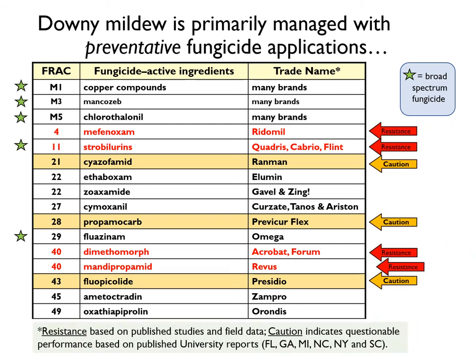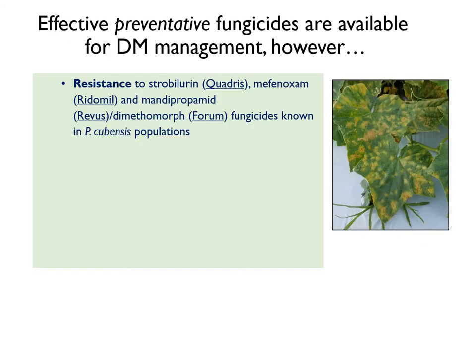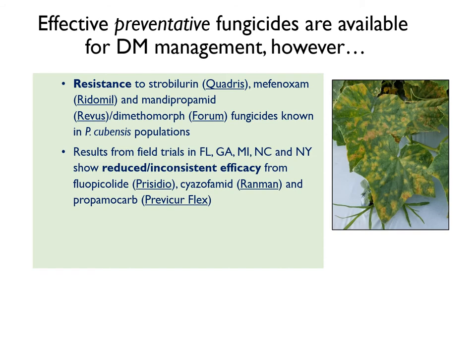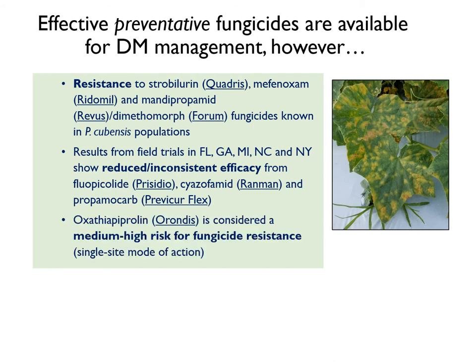Repeated fungicide usage also leads to the development of resistance in our pathogen population, which constantly undermines chemical control of downy mildew. Resistance to mefenoxam, strobilurins, dimethomorph, and mandipropamid have been documented in numerous field trials. Field trials have also shown reduced or inconsistent performance for oxazofamid, propamocarb, and fluopicolide. Oxathiopiprolin, or Orondis, is the current gold standard for downy mildew control. However, since it has a single site mode of action, it is considered a medium-high risk for the development of fungicide resistance in P. cubensis.